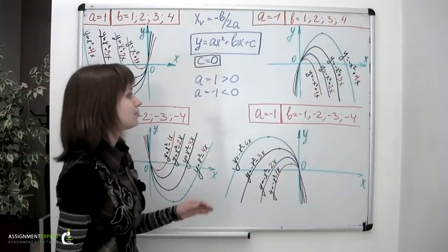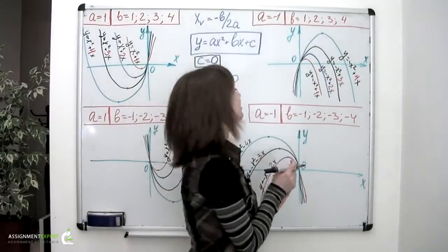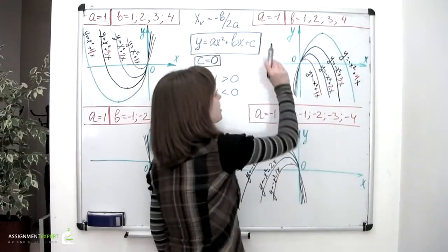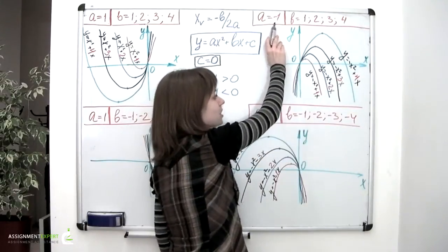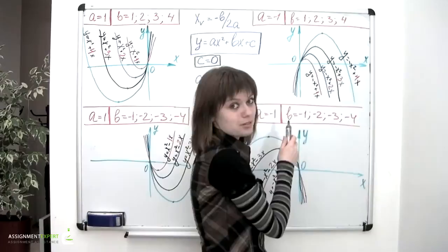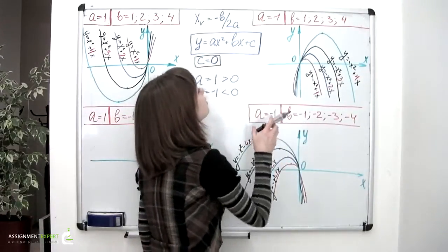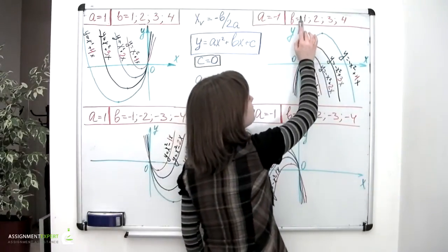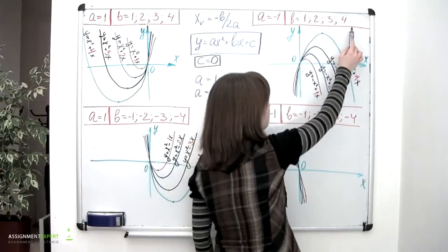Moving on to the top right corner. This time we have a set to the value of negative 1, which means that the branches of the parabola would be directed downwards. And b is set to the values 1, 2, 3 and 4.